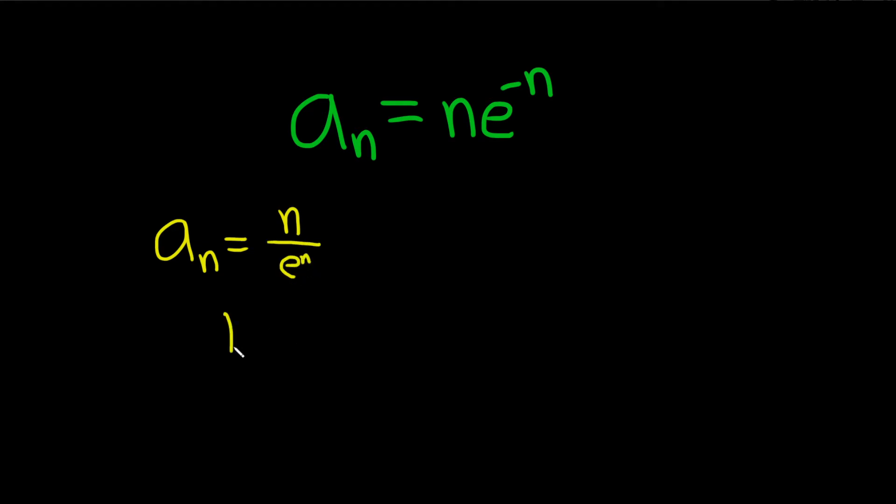Now we're actually going to take the limit, just make an observation. So if we take the limit as n goes to infinity of n over e to the n, well we have the case where it's infinity over infinity. So you could use L'Hopital's or you could just say it's zero because e to the n grows faster than n. So you could just say it's zero, but let's use L'Hopital's.